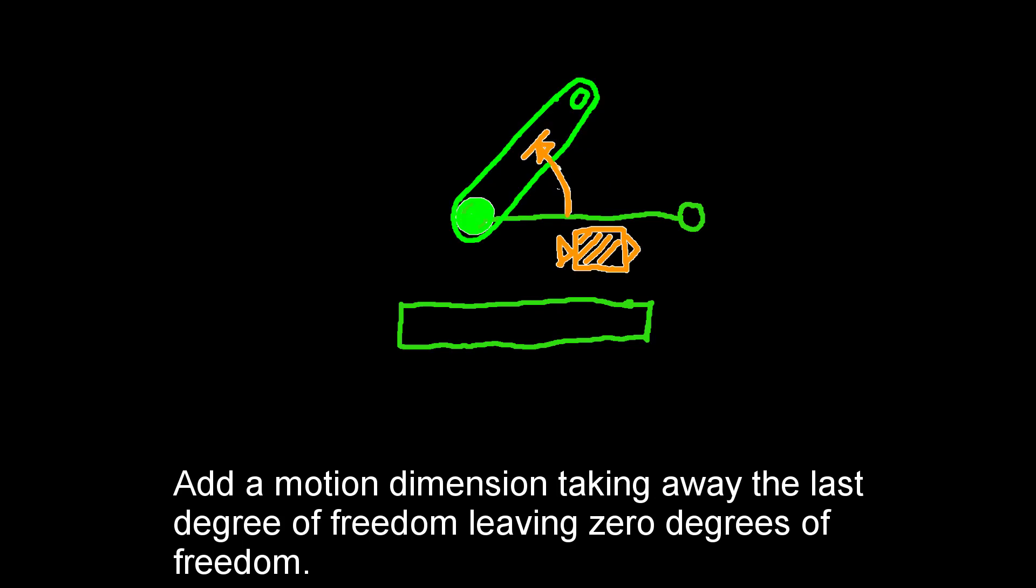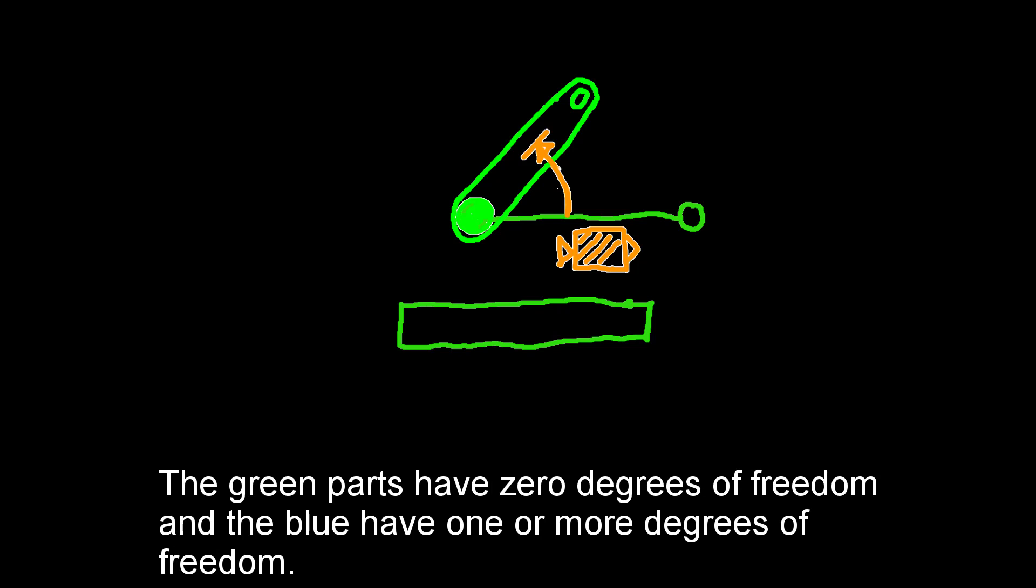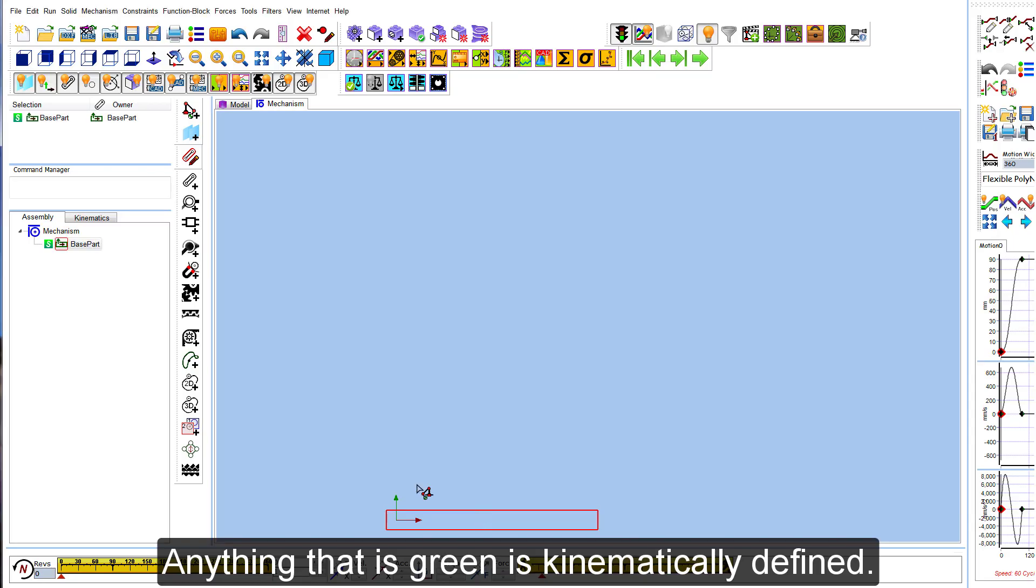Add a motion dimension, taking away the last degree of freedom, leaving zero. The green parts have zero, and the blue have one or more degrees of freedom. Anything that is green is kinematically defined.